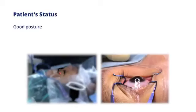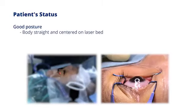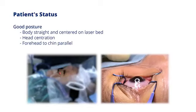Good posture of patient status relies on the four following positions. Body position should be kept straight and centered on the laser bed. Head position kept in the center of the back pillow in routine, but tilted to one side if prominent nose hinders the path of PI docking. Forehead to chin kept parallel level, but chin up for prominent forehead or chin down for prominent cheek.